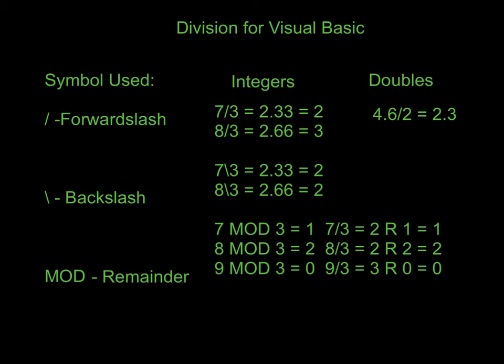So mod is going to be used often times, and we're going to do a couple of programs — especially ones that focus on why we use that — because we want to leave numbers left over so we can continue to recalculate them. One of the programs we're going to do to prove this is a change calculator that converts money appropriately so we know the minimal amount of change we need to give a person. Quick review: the forward slash will round up for integers, and is what we always use to divide doubles. If we're dividing integers properly, we need to use the backslash so our number always rounds down. And then we use mod to pull out the remaining whole numbers that are left over.